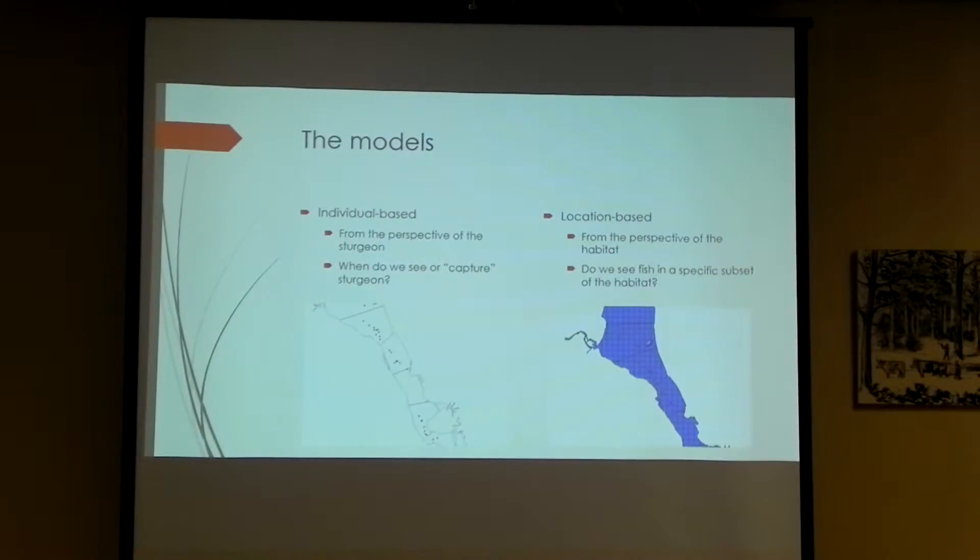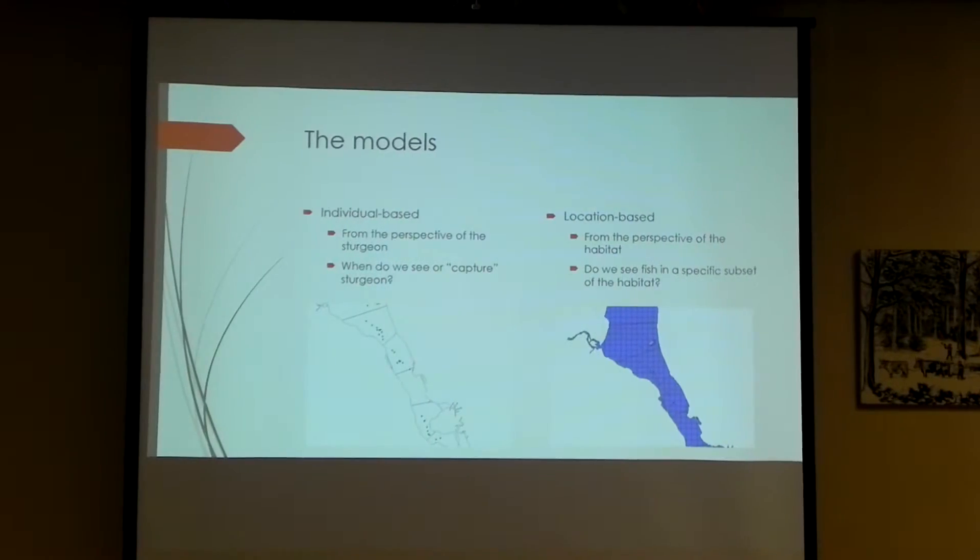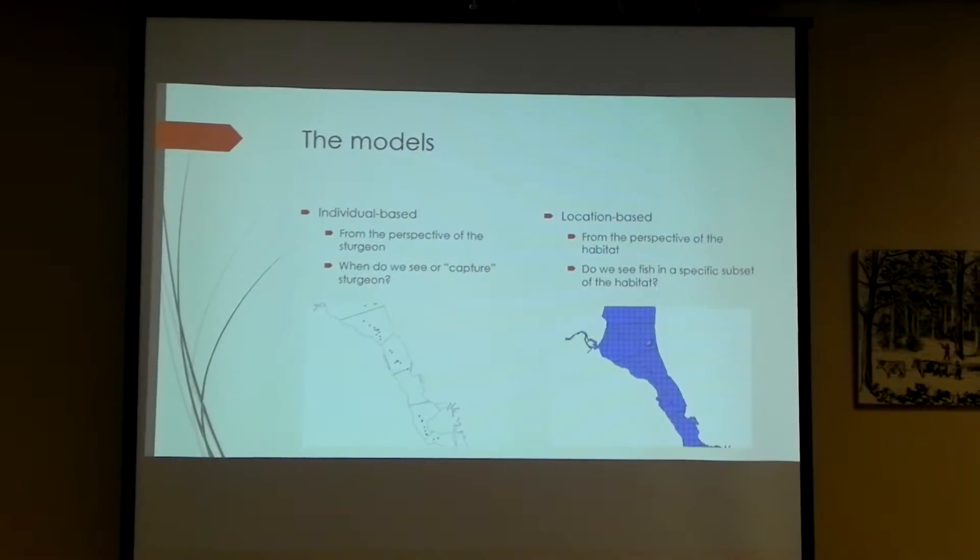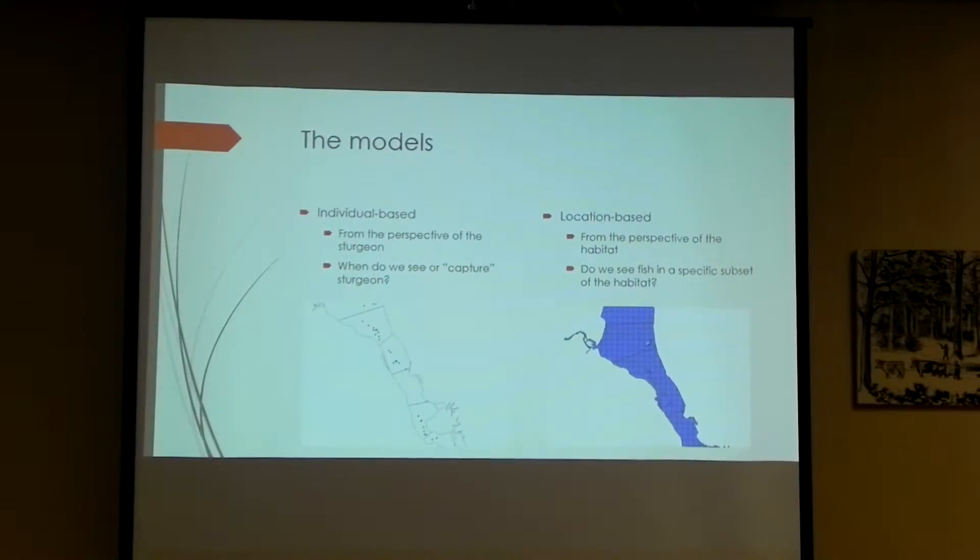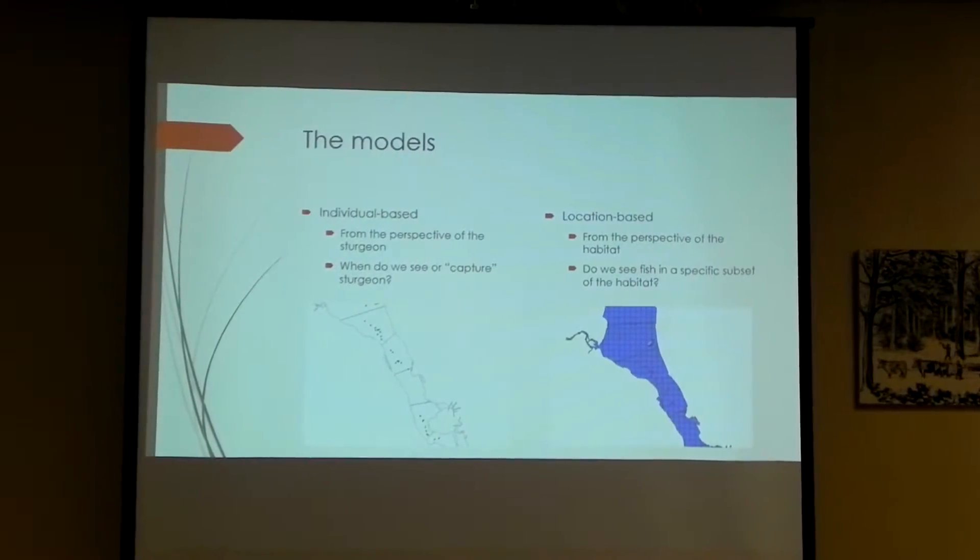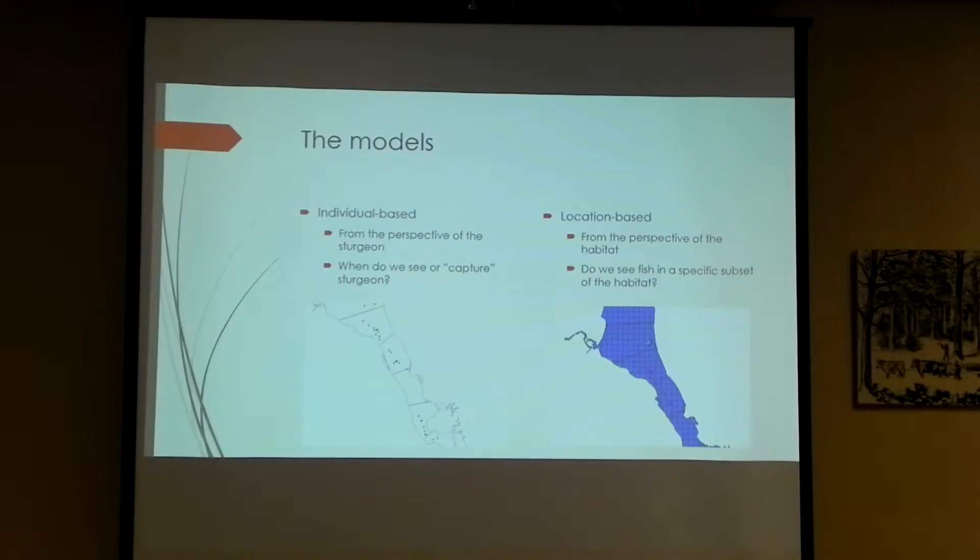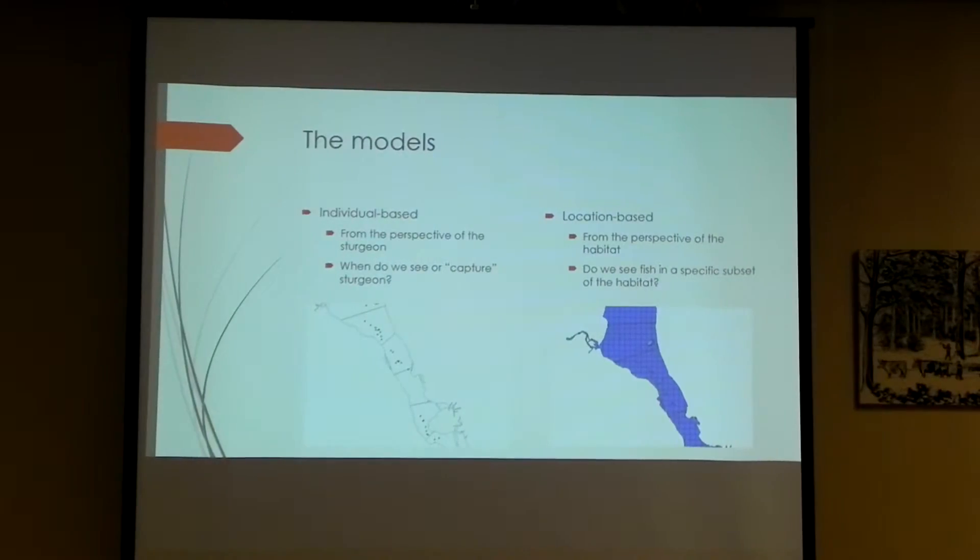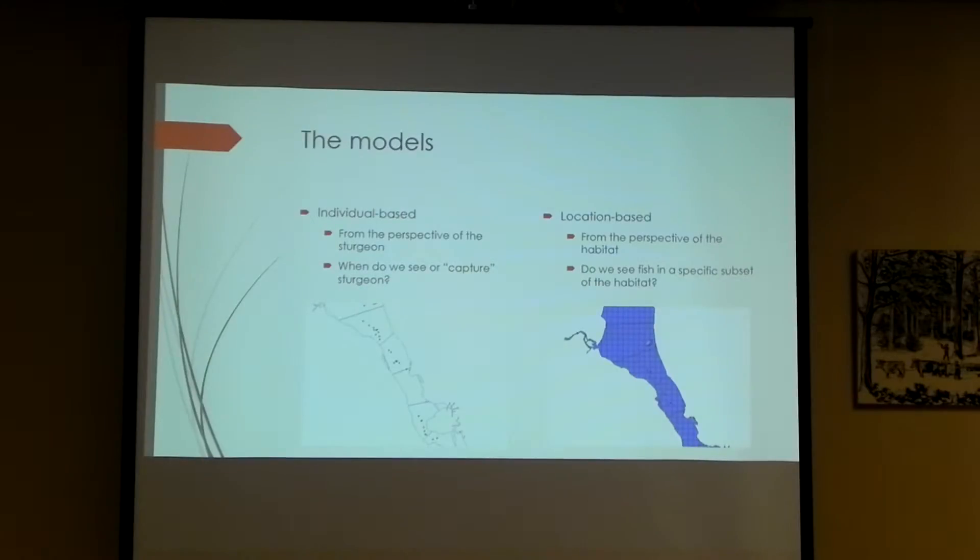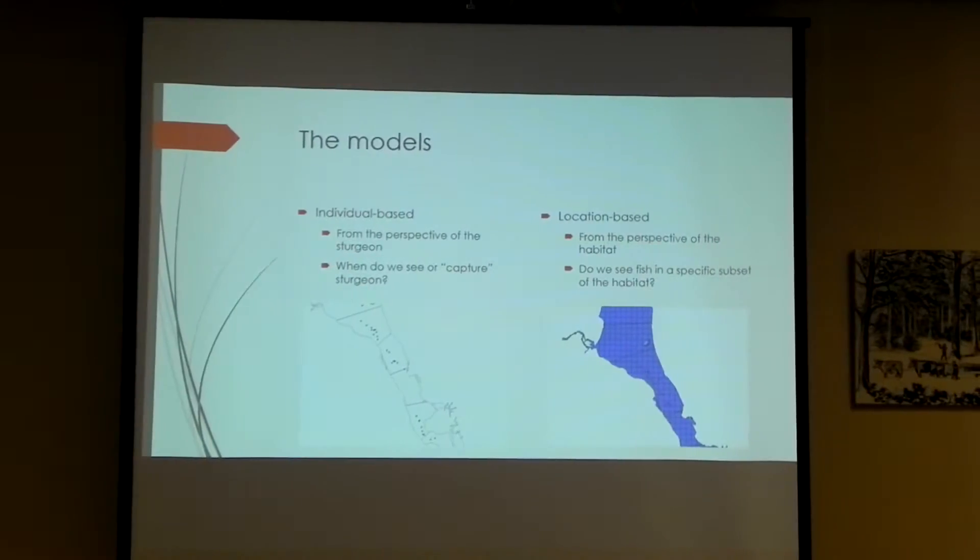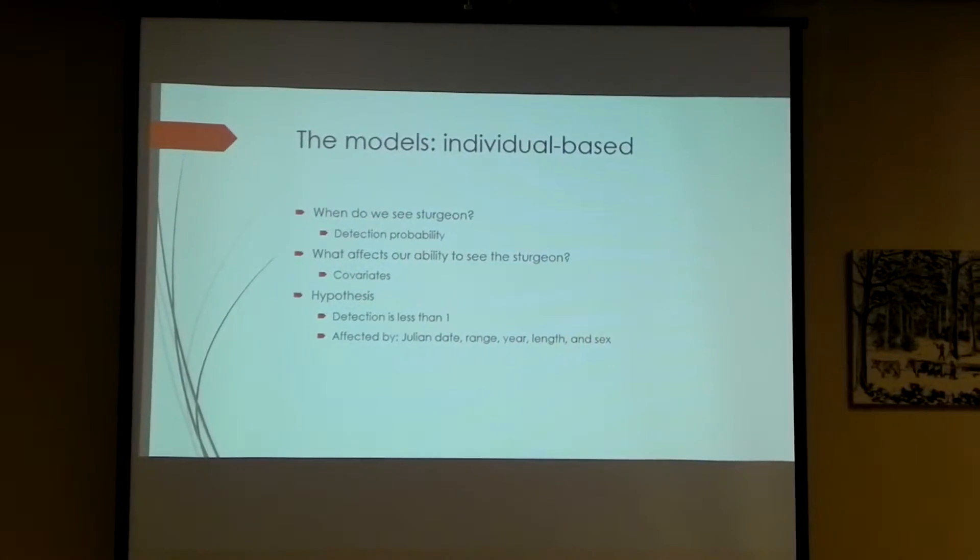Okay, so the models. So moving on to the models. We had two models which we're looking at. So the multiple analytical perspectives is two, which is one-on-one, I suppose. So we have what I'm calling an individual-based model and a location-based model. The individual-based model is just referring to the sturgeon themselves. We're concerned with when do we see or when do we capture the sturgeon. And the associated photograph is just an example of the pinpointed locations of the sturgeon. So when do we see them and when do we not see the sturgeon. And then the second model I'll be discussing is location-based. So from the perspective of a habitat, if I'm a piece of habitat in the Hudson, and these are my characteristics, do I see a sturgeon, do I not see a sturgeon? How many sturgeon perhaps?